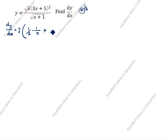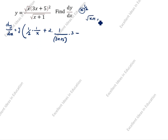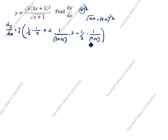The power 2 comes, so you write 2 divided by (3x + 5) — it comes to the denominator. Then differentiate 3x, which gives 3. The denominator term is root of (x + 1), written as (x + 1) to the power 1/2. So 1/2 comes this side, and (x + 1) comes in the denominator — 1/(x+1). Differentiate x plus 1, giving 1.